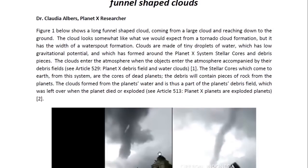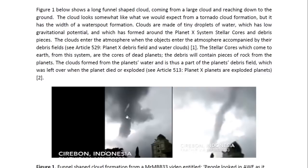Figure one below shows a long funnel-shaped cloud coming from a large cloud. Up there you can see it's a large cloud reaching down to the ground. You can see how long that is. Now the cloud looks somewhat like what we would expect from a tornado cloud formation, but it has the width of a water spout formation.